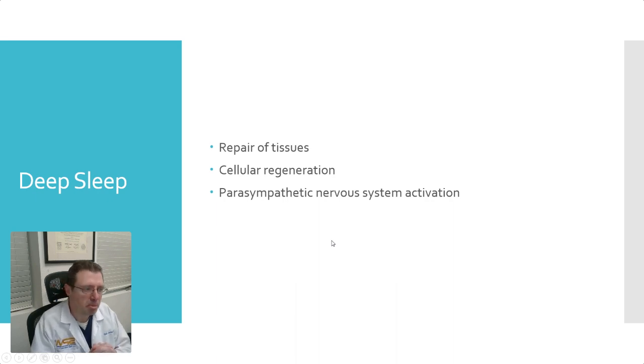So what happens during deep sleep? We repair tissues. Our cells regenerate. All of the maintenance processes are also taking place during deep sleep when the parasympathetic nervous system is able to be fully activated. Your heart rate slows down, your breathing slows down, and even your temperature decreases. All of these things happen during deep sleep.